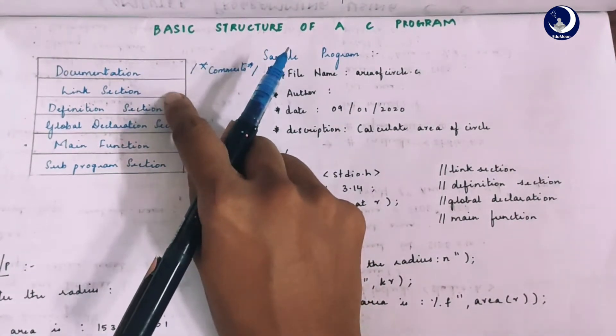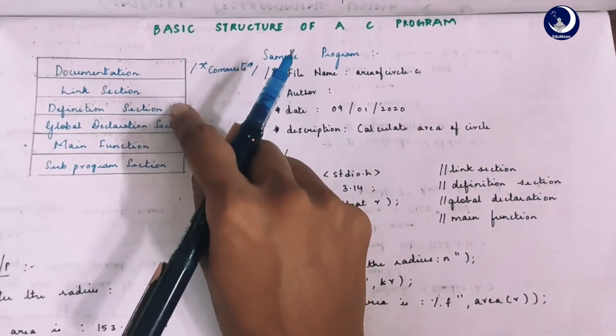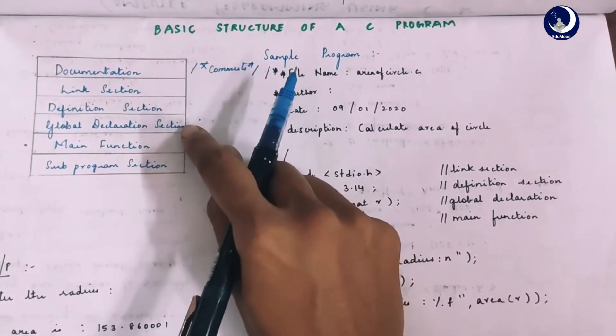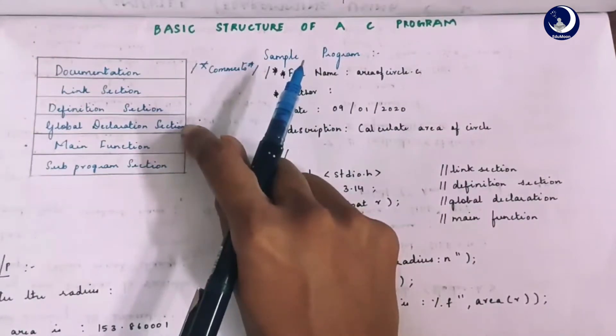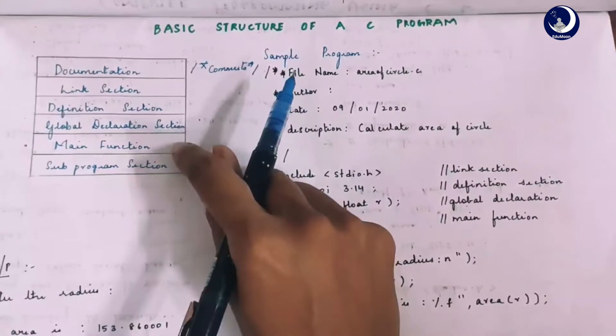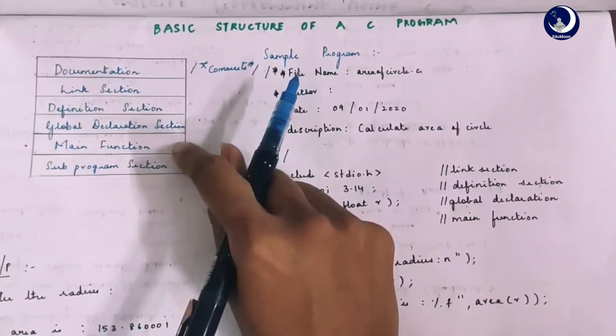The third section is the definition section which is used to define constants for the program. The fourth section is the global declaration section which is used to declare variables that can be shared among different functions within the program. The fifth section is the main function which has two different subsections. The first section being the declaration section and the second section is the executable section.